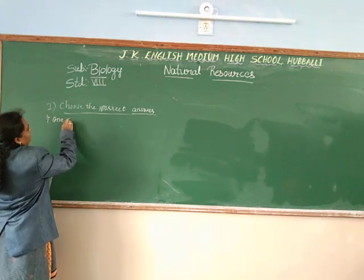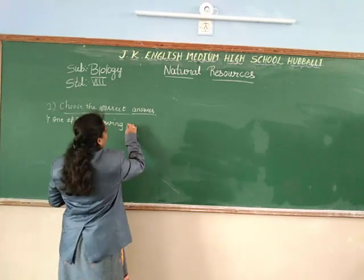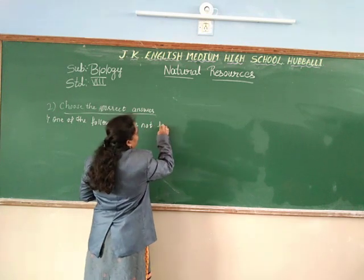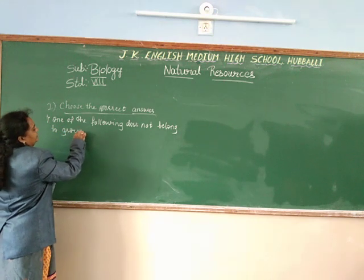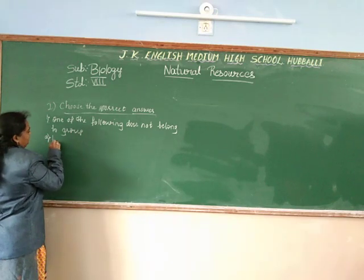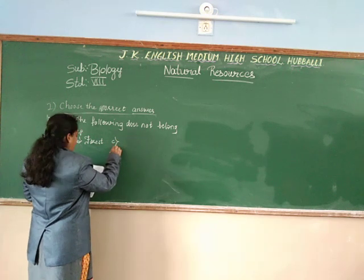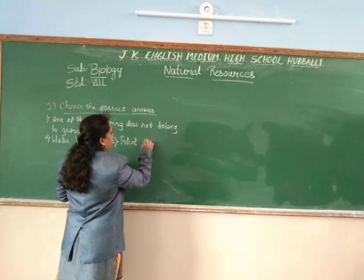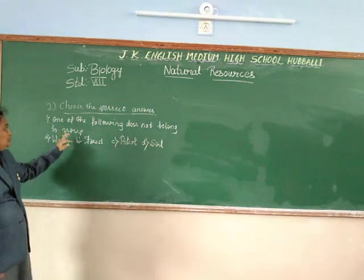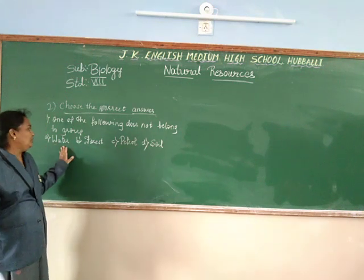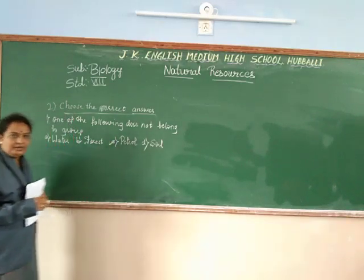Question 1: One of the following does not belong to the group. Options are: A) water, B) forest, C) petrol, D) soil. Water is related to forest, and forest is related to soil. The one that does not belong to this group is petrol. Correct answer is petrol.